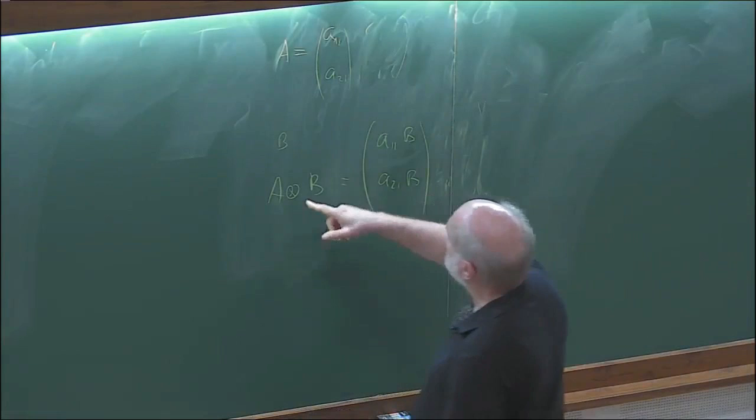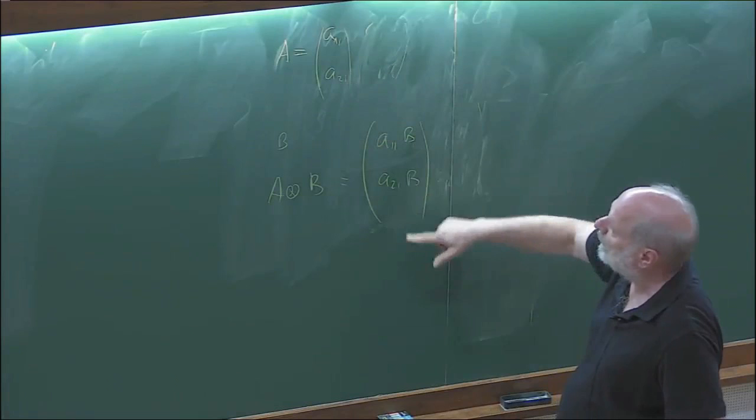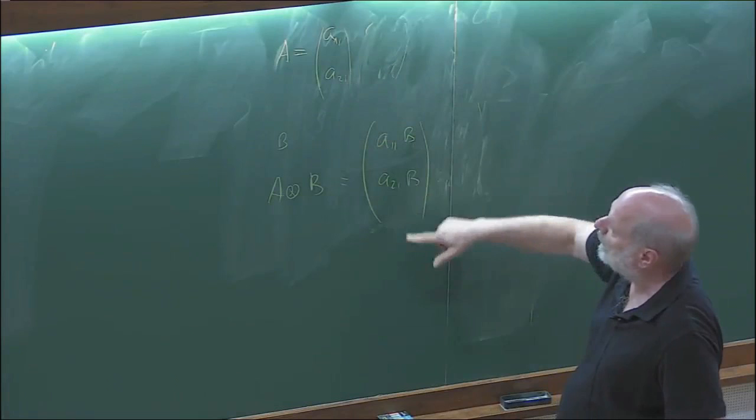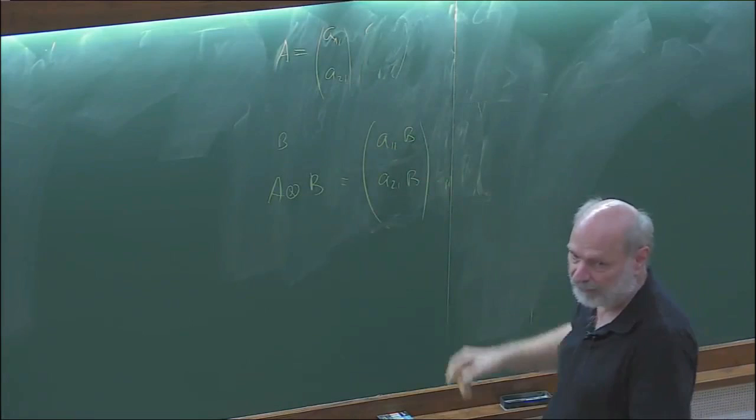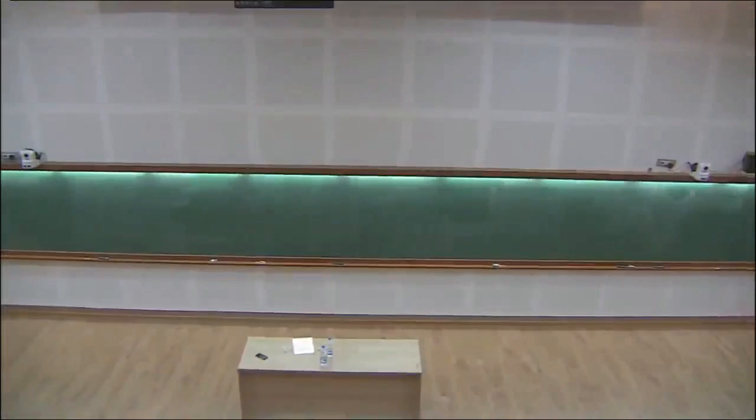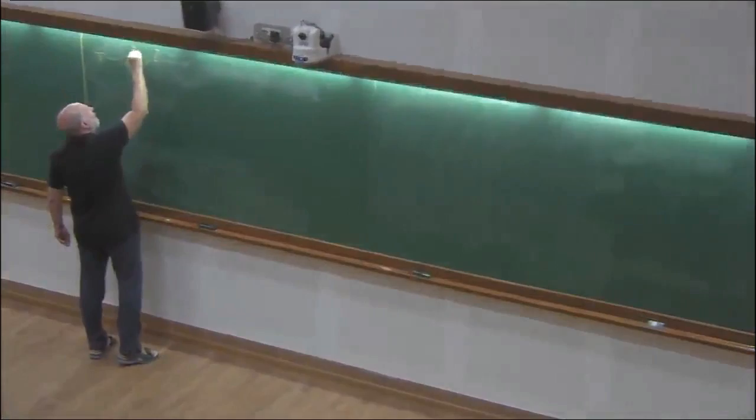This product ansatz works for a sub-manifold of parameters. The next simplest thing you can try is: take pi proportional to Z^{sum N_k} times Y^{sum_{k=1}^{L} N_k N_{k+1}}. This adds a nearest-neighbor term. The first factor was the simple product ansatz; the second factor with parameter Y accounts for nearest-neighbor correlations.